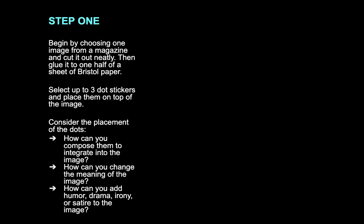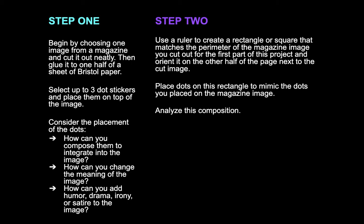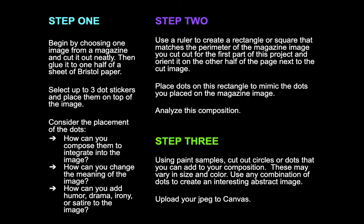In step one, you're going to choose an image from a magazine to cut out. Then you should play around with what happens to the composition by placing the circles in various locations. How can you change the meaning of this image by adding the dots? Once you've found a good spot, stick or glue your circles down. Then working on the right side of the composition, you will draw a rectangle the same size as your first image. You will recreate the composition, starting with the three dots. Using paint samples, colored pencils, or scraps of paper, make an interesting composition. You can even make a digital collage if you're comfortable working in Photoshop. Do whatever you need to do to make a compelling composition, starting with the fixed position of the three dots from the first composition.